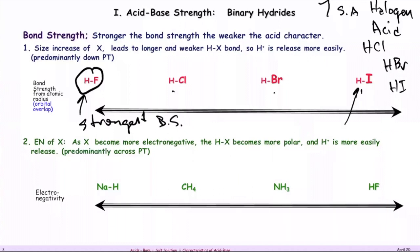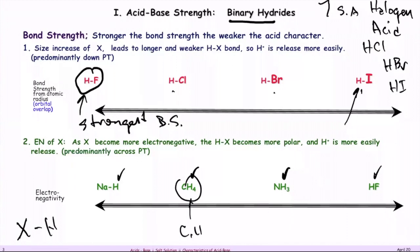We're looking at binary hydrides — one element bonded directly to hydrogen. Binary means only two different elements are involved, like carbon and hydrogen, or nitrogen and hydrogen. Among a series like CH₄, NH₃, HF — we need to figure out which is the strongest acid and why. For the series going across a period, we look at electronegativity; going down a group, we look at bond strength.